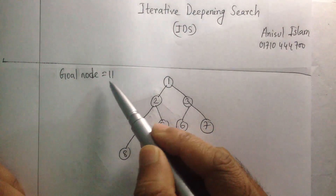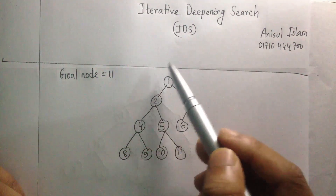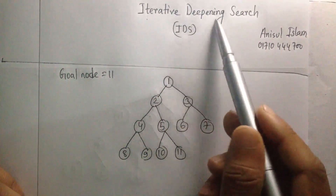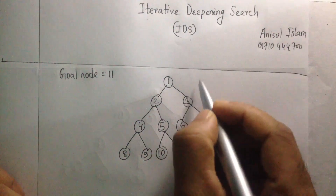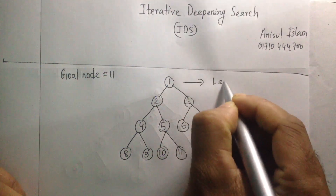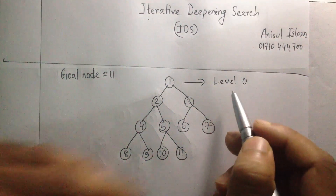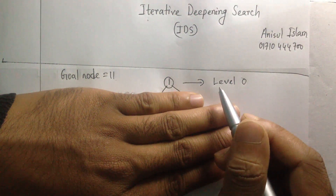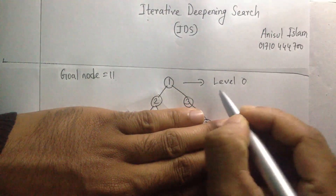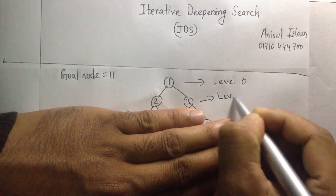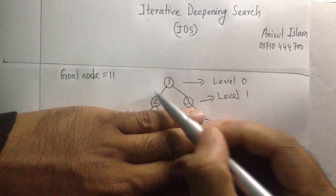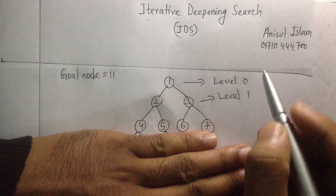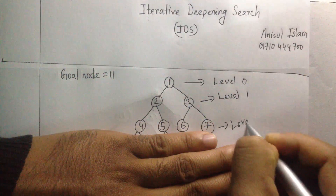Our goal node is 11, and we're going to find it by using IDS, which is normally known as Iterative Deepening Search. How does it work? You're going to start with level 0. In level 0 you're going to apply Depth First Search. If you don't find the goal node, then you increase your level and again use Depth First Search.